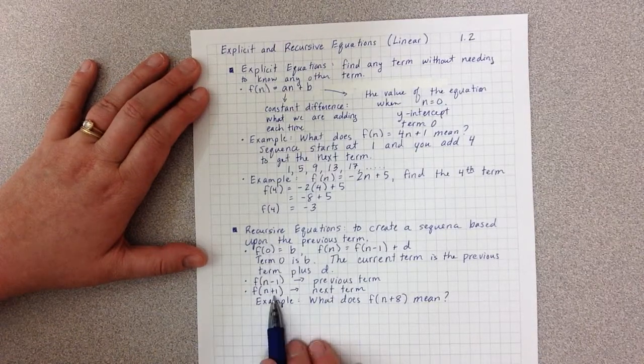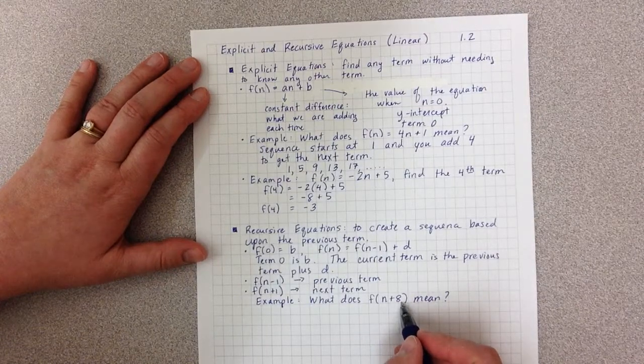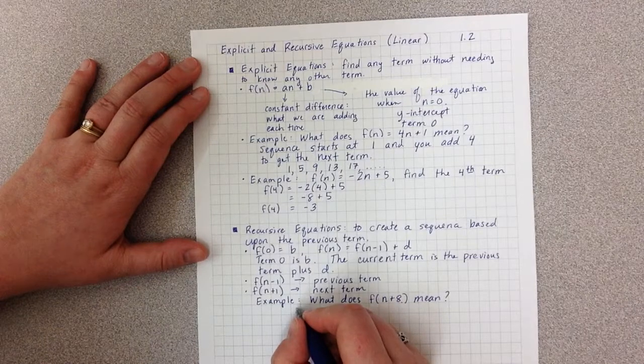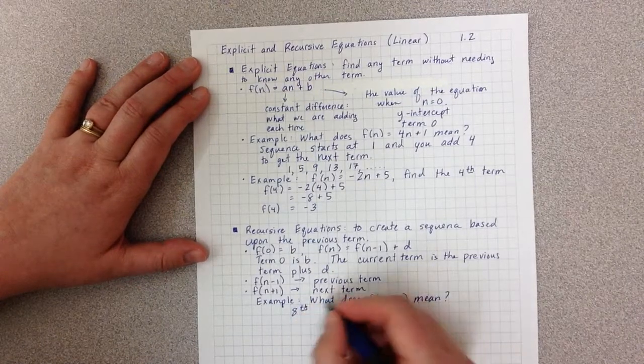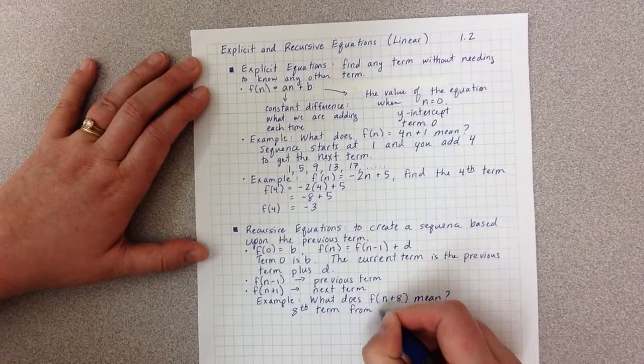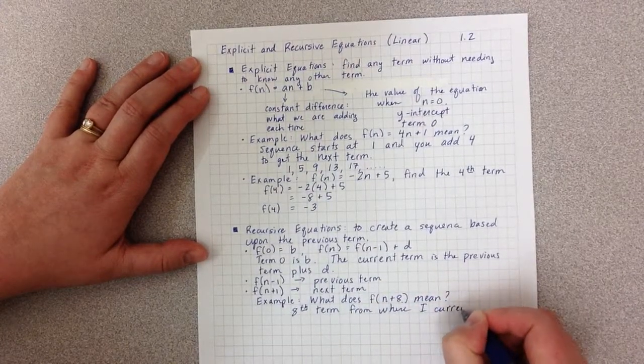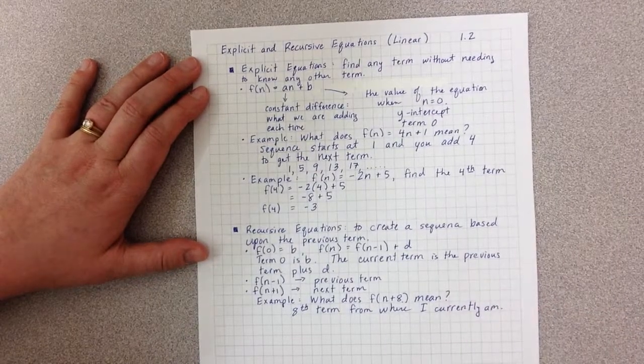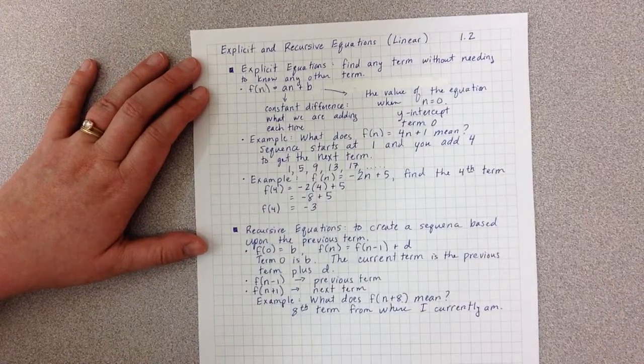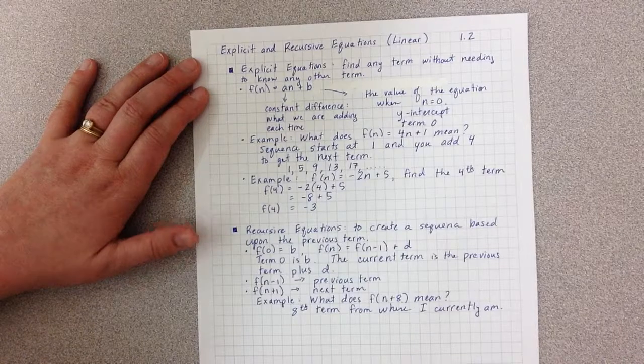And what this means is that plus 1 is the next term, and if I keep going, I'm going to go all the way out to 8 terms later. So I'm looking for the 8th term from where I currently am. So if I'm currently at step 1, I would go another step and another step, all the way out to step 9. So 1 to 9 is 8 steps.